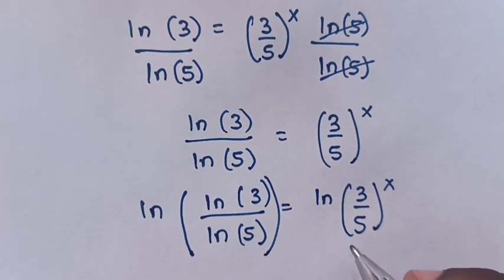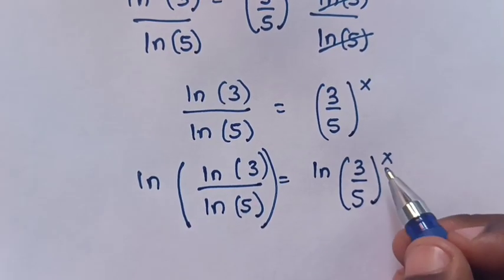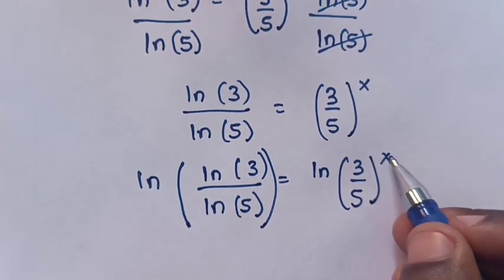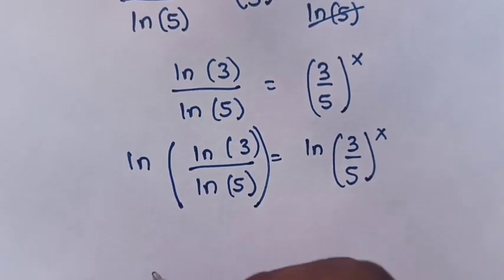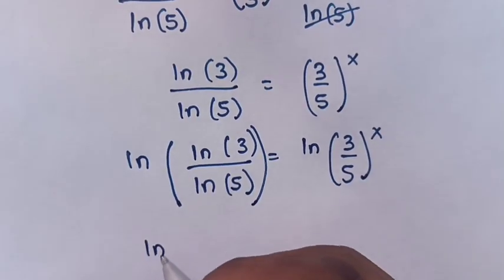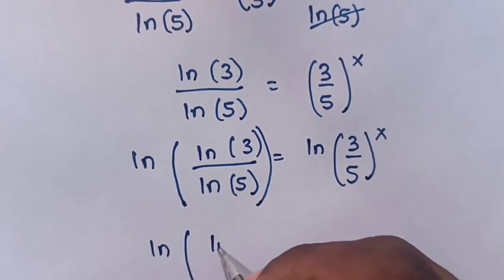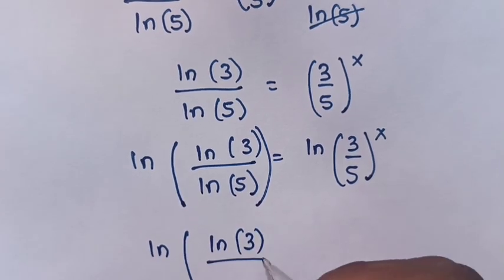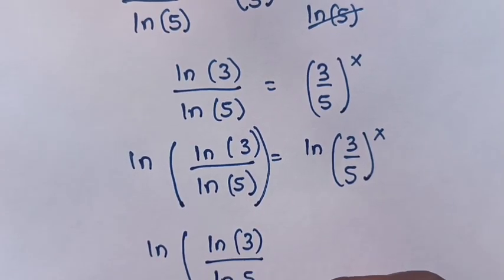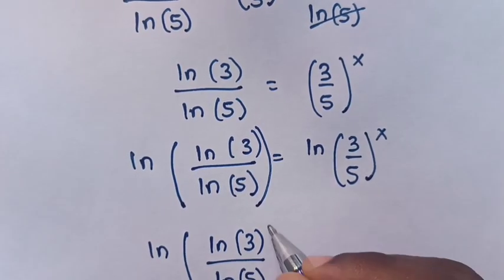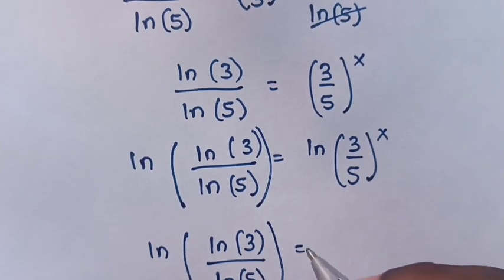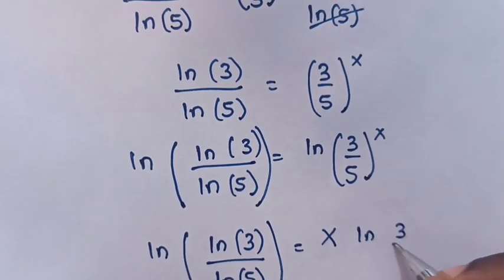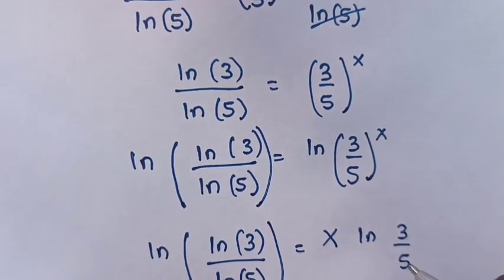So then, the exponent x will move to the front. Our equation will be log(log(3) / log(5)) is equal to x · log(3/5).